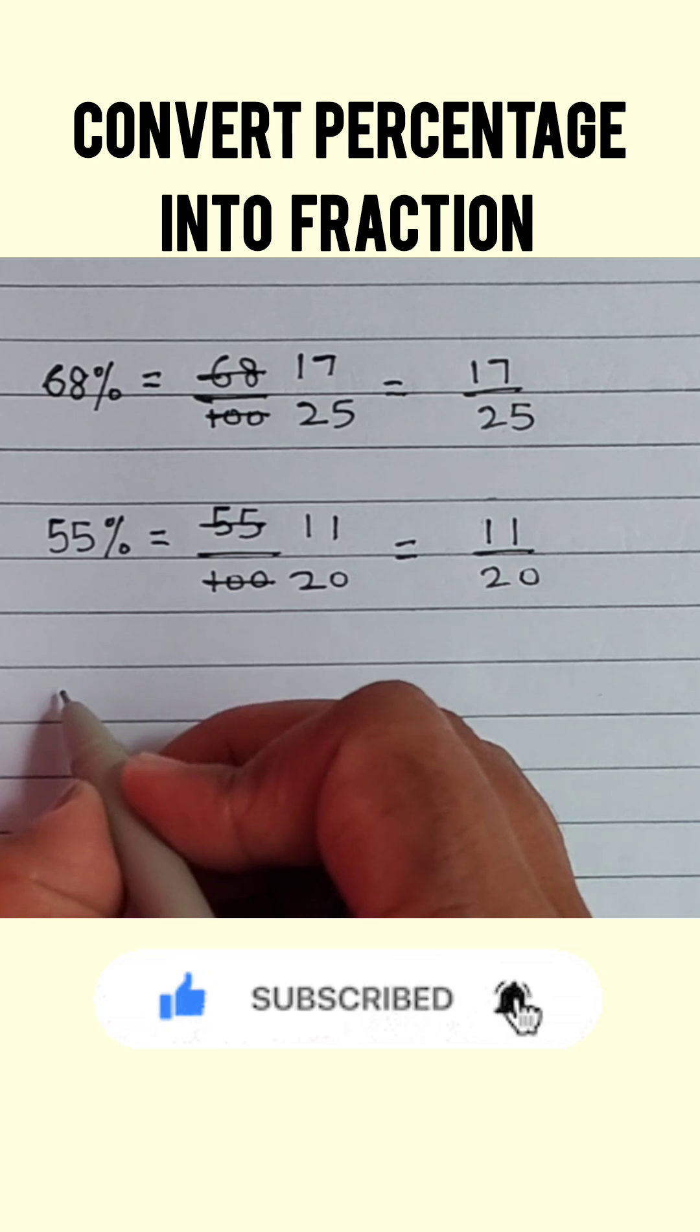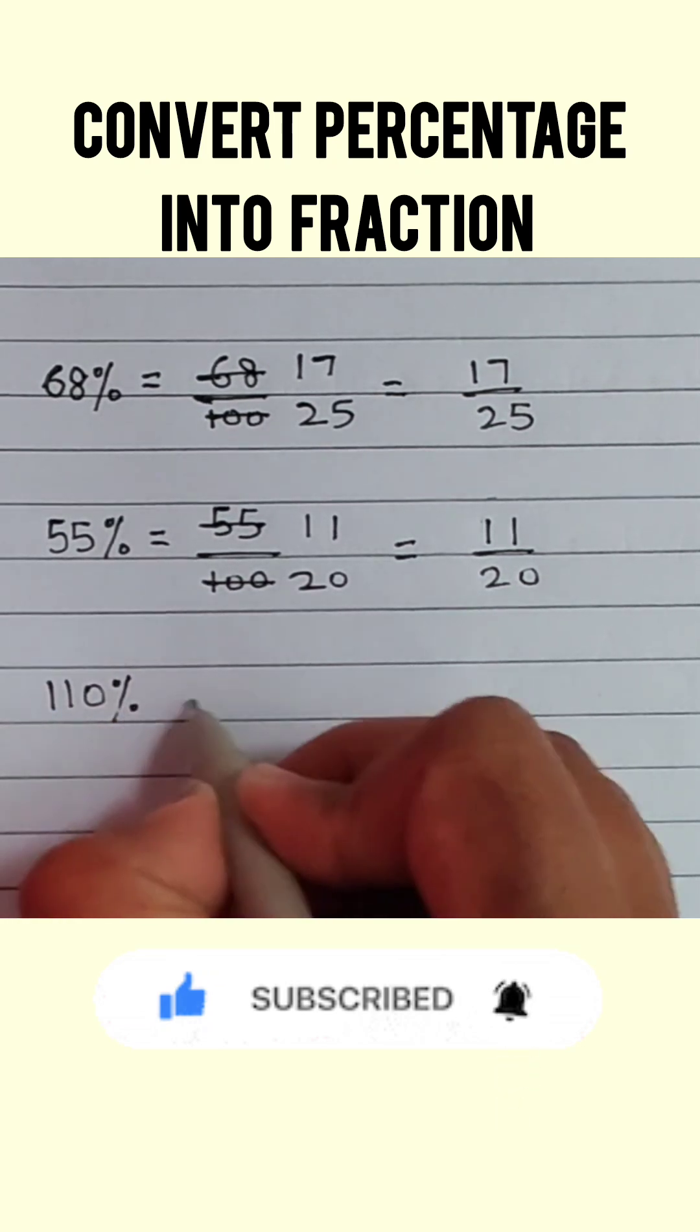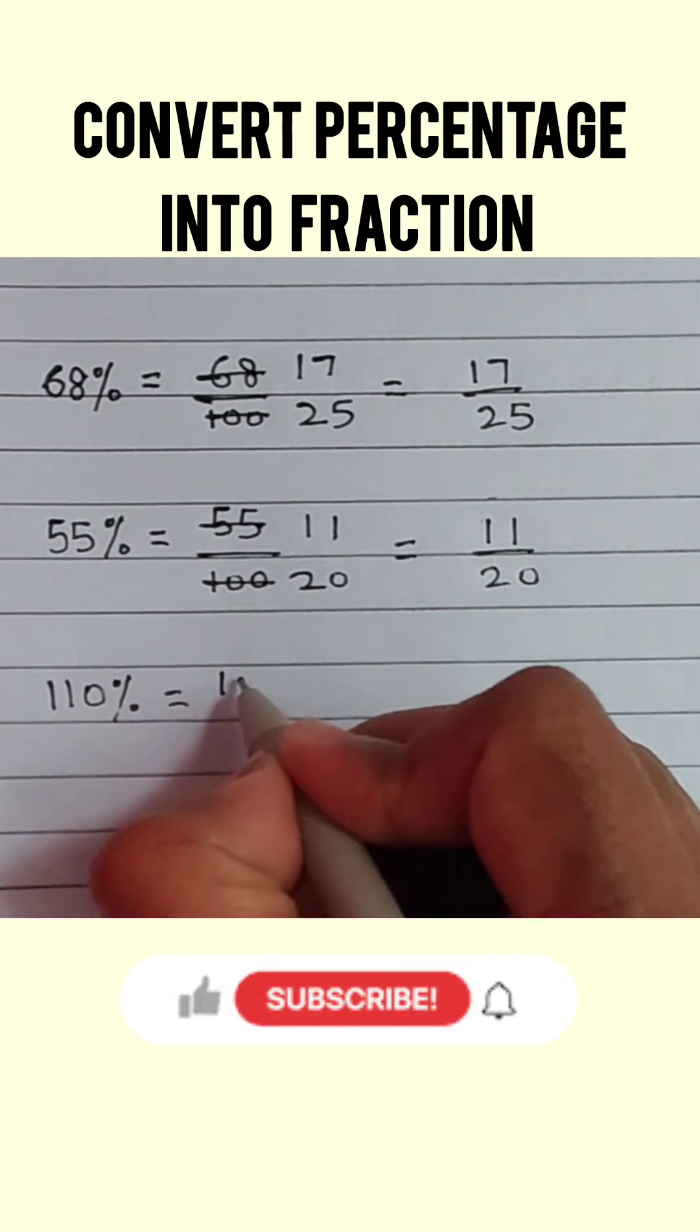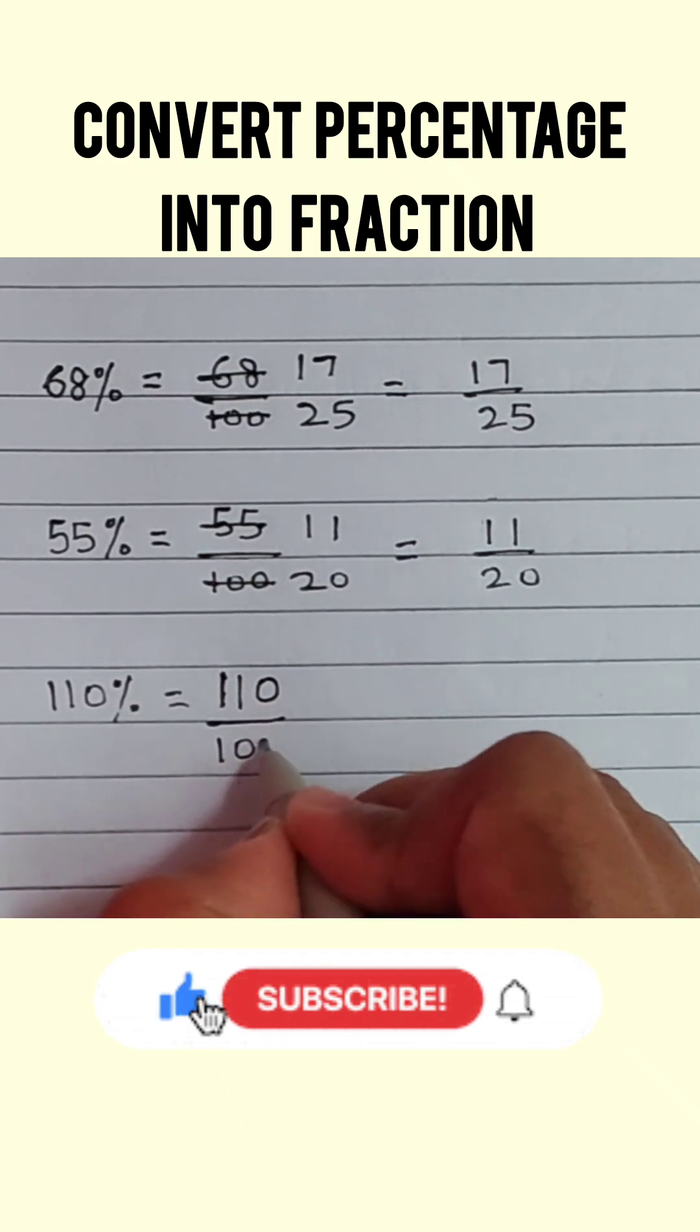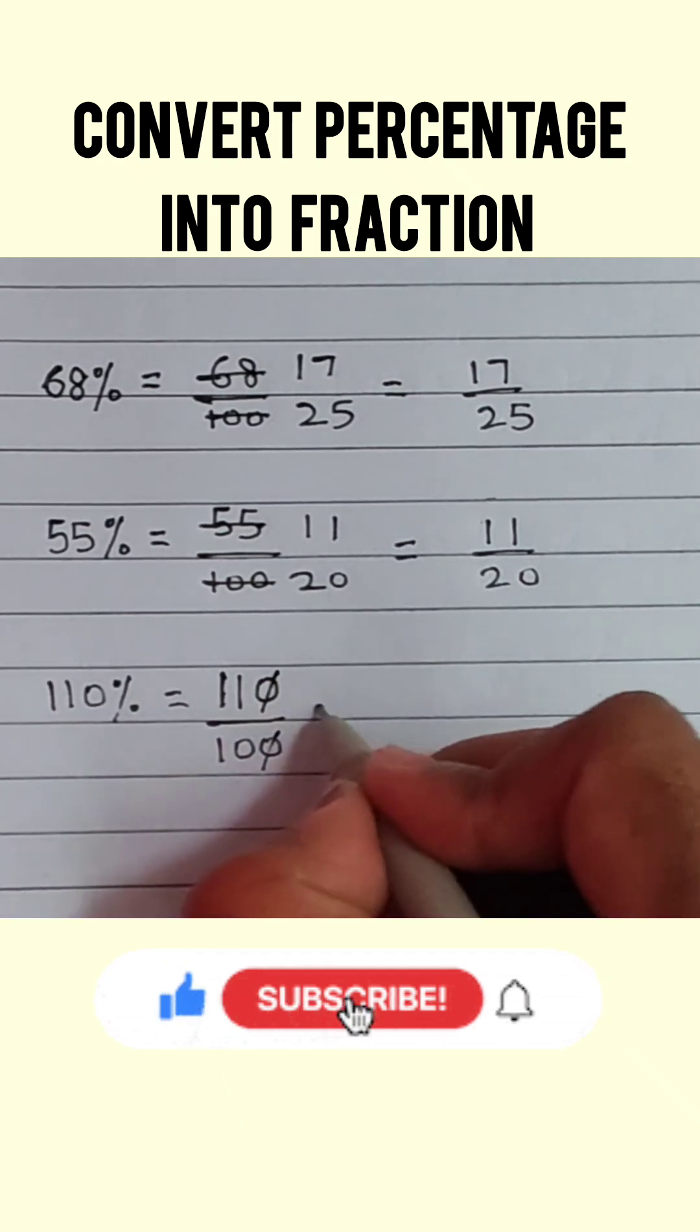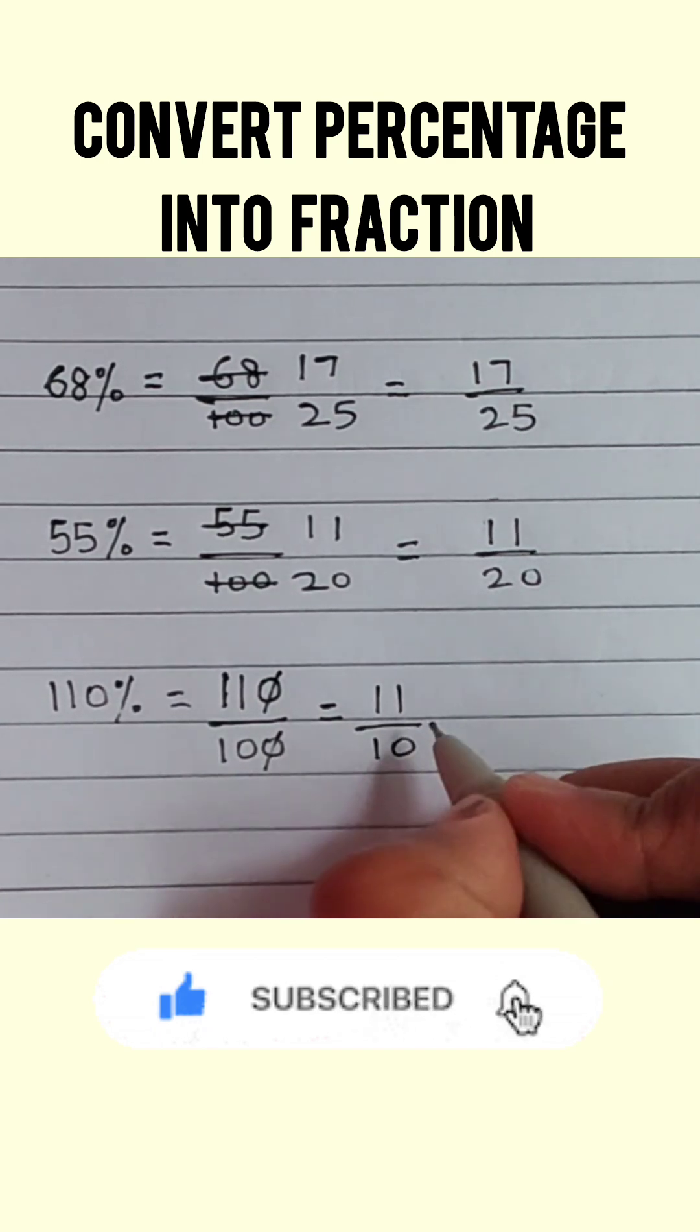Next is 110%. 110 upon 100. Now to reduce it to the lowest term, we will cancel 110 from both numerator and denominator. And the fraction will be 11 upon 10.